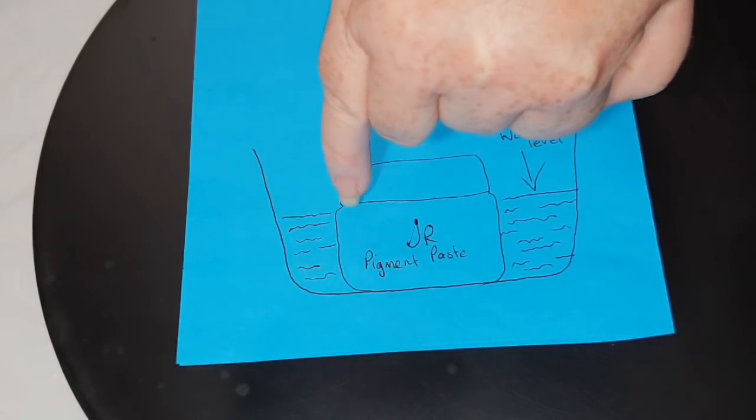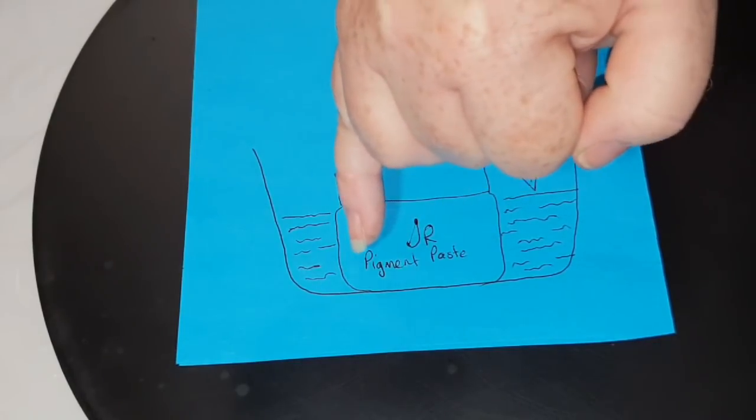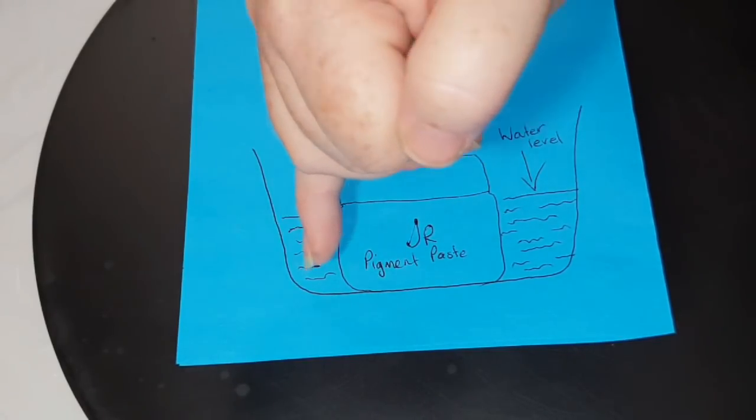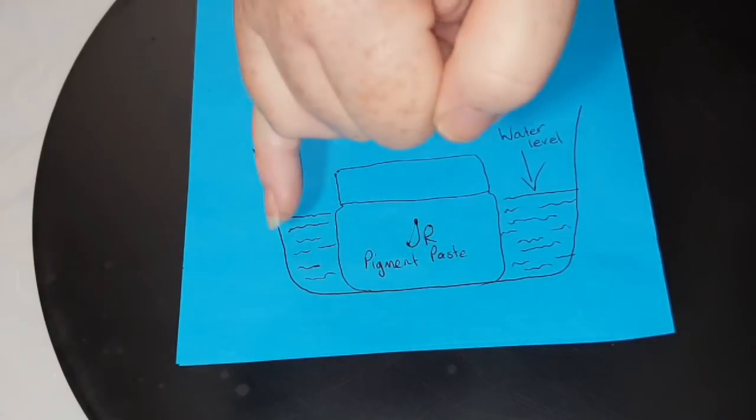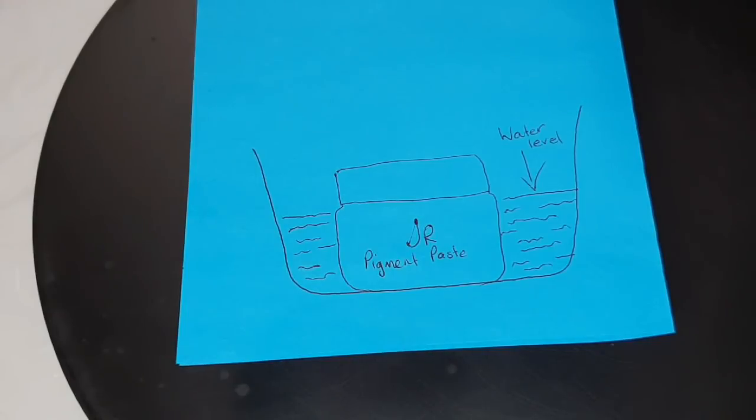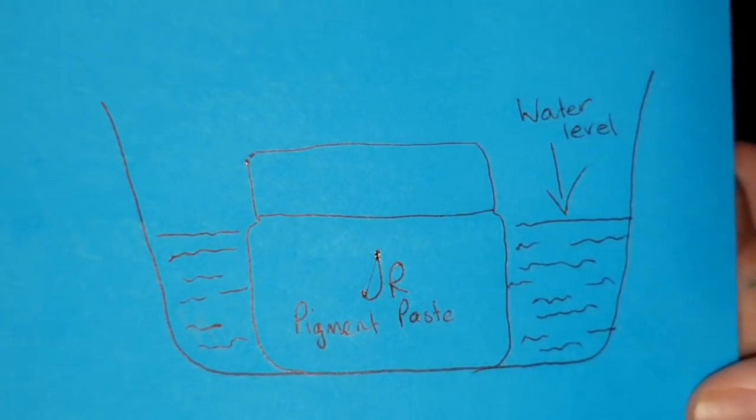The pigment paste lid closes at this point. I've kept the water level to just below that point because this is where all the pigment paste is. It's not in the lid, it's down here. So this is the section that the warm water is warming up and loosening up.